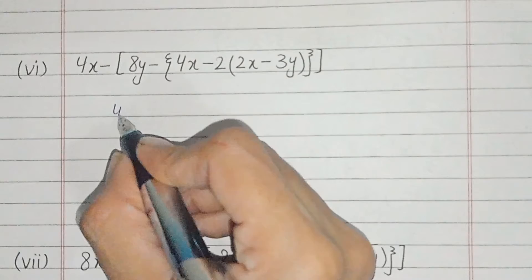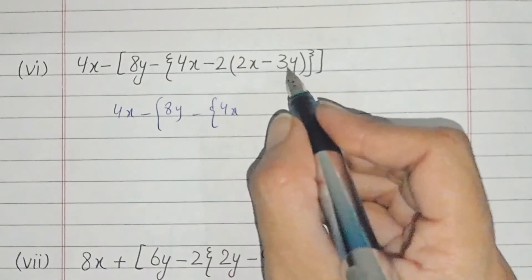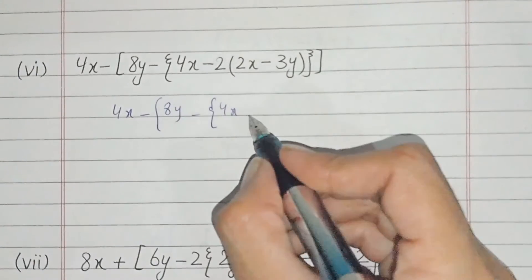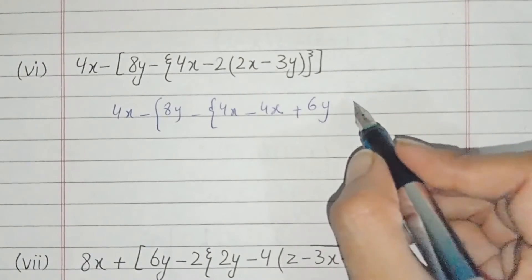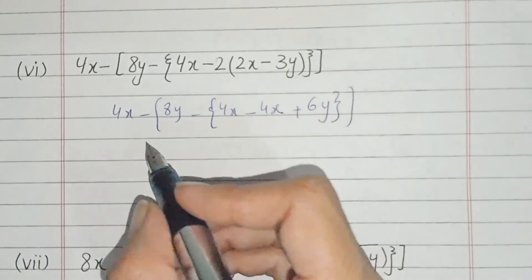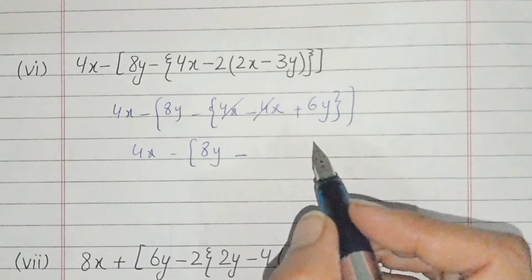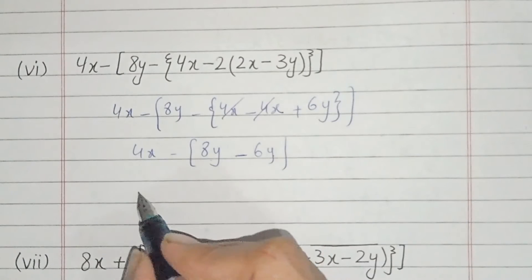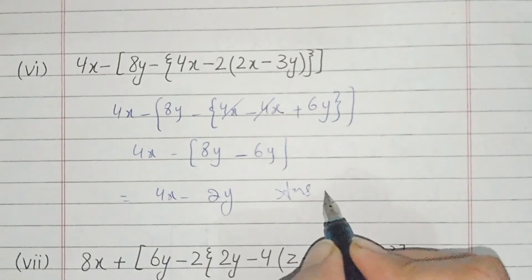Part number 6: 4x minus 8y. First of all we will solve the small bracket. We will solve all the other terms and multiply. We get 4x and minus minus gives plus 6y. Now we solve this bracket: 4x minus 8y plus minus minus 6y. This bracket is simplified — our result is 4x minus 2y. This is the answer of the sixth part.